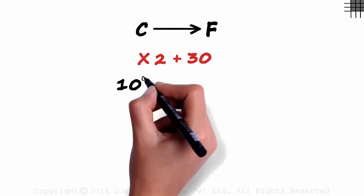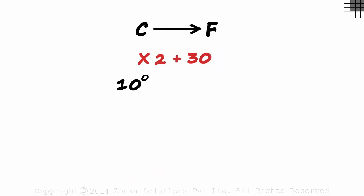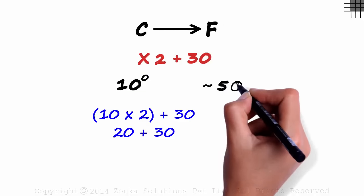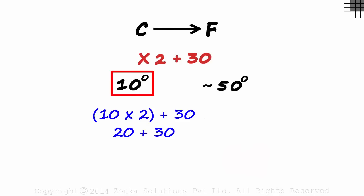Say 10 degrees Celsius. We need to convert this into Fahrenheit. Multiply it with 2 and add 30. 20 plus 30 is 50 degrees. 10 degrees Celsius is approximately 50 degrees Fahrenheit.